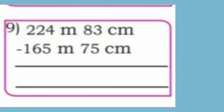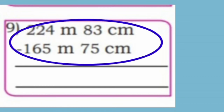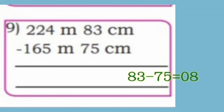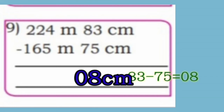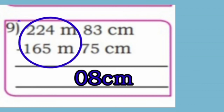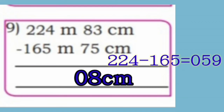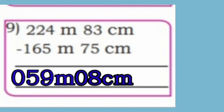Now ninth one: 224 meter 83 cm minus 165 meter 75 cm. First subtract centimeters: 83 minus 75 is 8 cm. Next subtract meters: 224 minus 165, that is 59 meter. So the answer is 59 meter 8 cm.